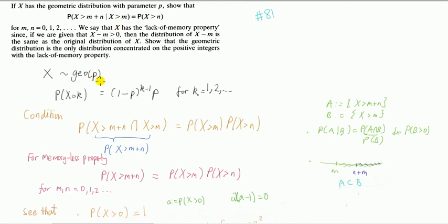At first thought you might think, okay, so in problem 81 I showed that the geometric satisfied this property, then we should go through all the other discrete random variables and show this property doesn't hold. Well, that method doesn't work because there are limitless discrete random variables.